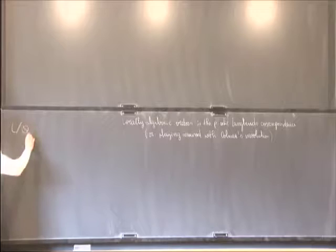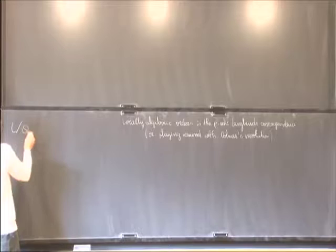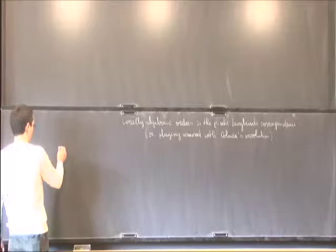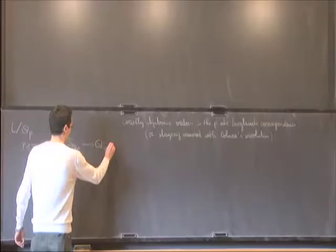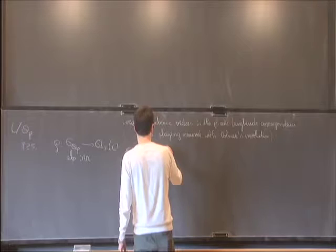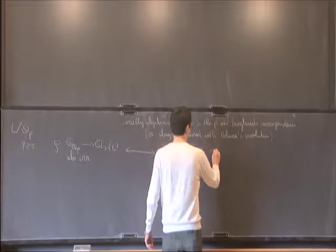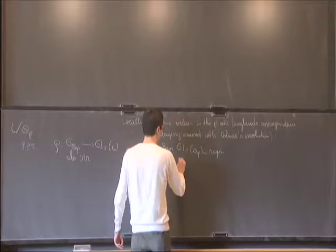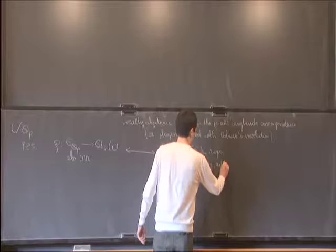Let me fix a finite extension L of Q_p. This time p will be any prime, so I'm not assuming that p is at least 5 as in Paskunas's talk. Let me recall that at least if p is greater than or equal to 5, you have a natural bijection between absolutely irreducible two-dimensional L-representations of G_{Q_p} and some Banach space representations with many adjectives: absolutely irreducible, unitary, admissible, and non-ordinary.